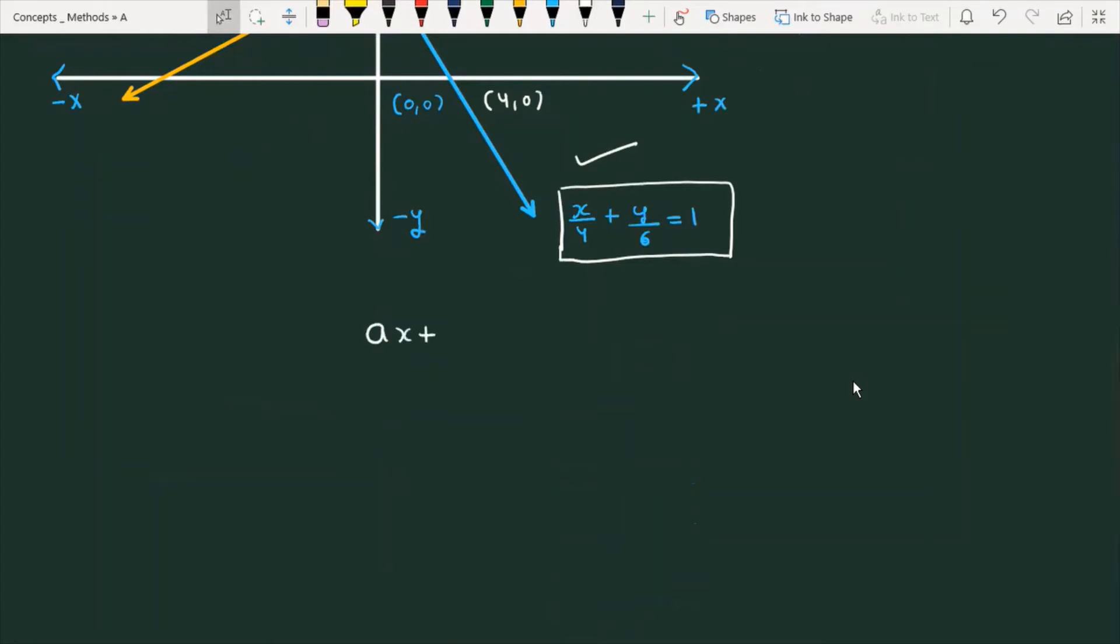If ax + by + c = 0 is the equation of a line, and you are asked to find the equation of a line perpendicular to it, the format is bx - ay + λ = 0.